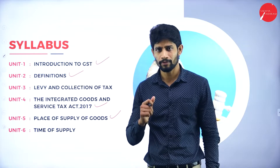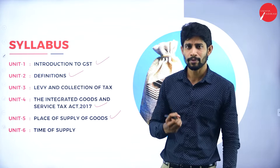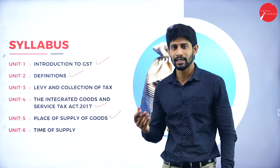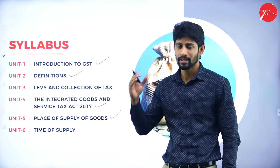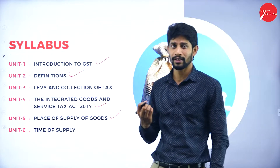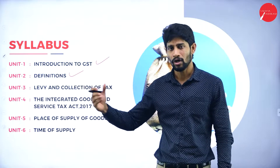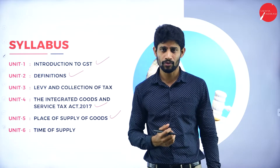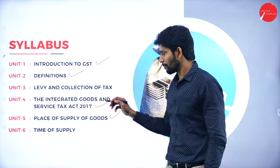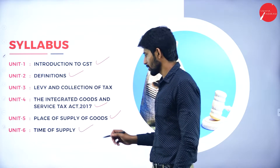Unit number five deals with place of supply of goods. The place of supply is very important because by that we determine the value of supply — from where the supply happened, to which place the supply happened, the place of delivery or dispatch of goods from the supplier to the recipient, or where the recipient is receiving the goods.